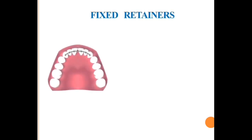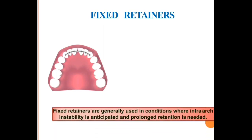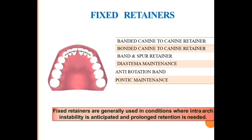The next category is fixed retainers, where a portion of wire is bonded to the lingual surface of the teeth to maintain their position. Fixed retainers are generally used in conditions where intra-arch instability is anticipated and prolonged retention is needed. Examples include banded canine-to-canine retainer, bonded canine-to-canine retainer, band-and-spur retainer, diastema maintenance, anti-rotation band, and pontic maintenance.